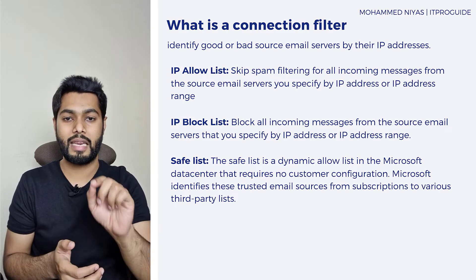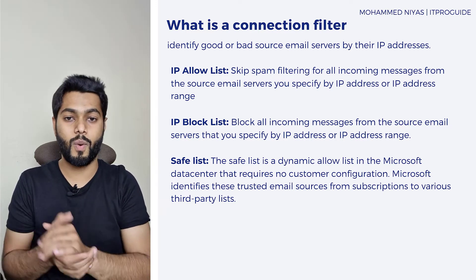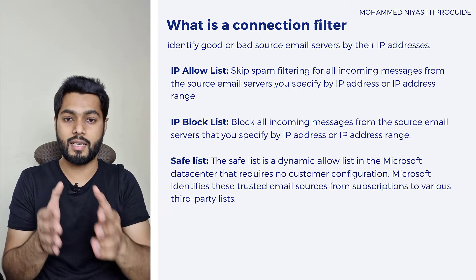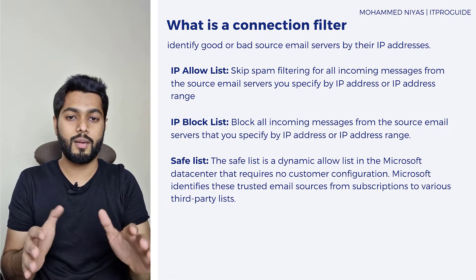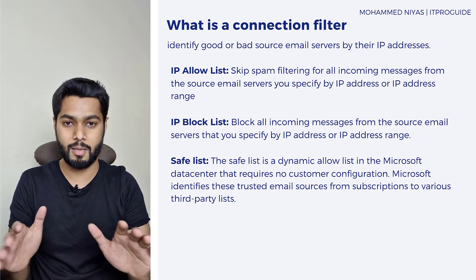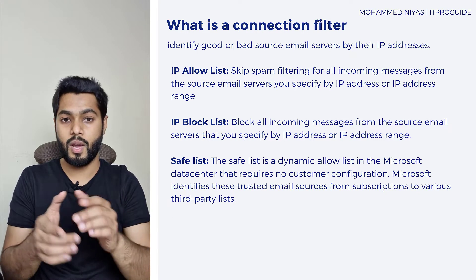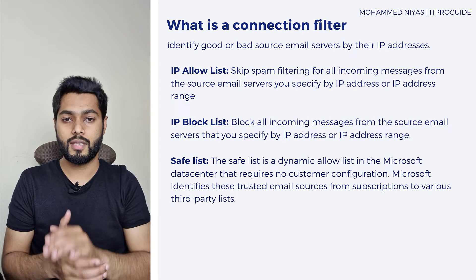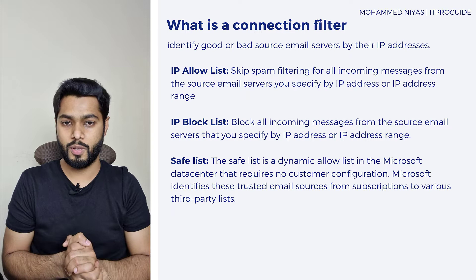The only option you have with the safe list is to enable or disable it. Microsoft has subscriptions with third-party providers, and based upon the reputation of the IP address, emails coming from those IP addresses will be defined as good or bad — that part is taken care of by Microsoft. Any IP address configured in the IP allow list will be skipped from all spam filtering and delivered directly to the inbox of the user.